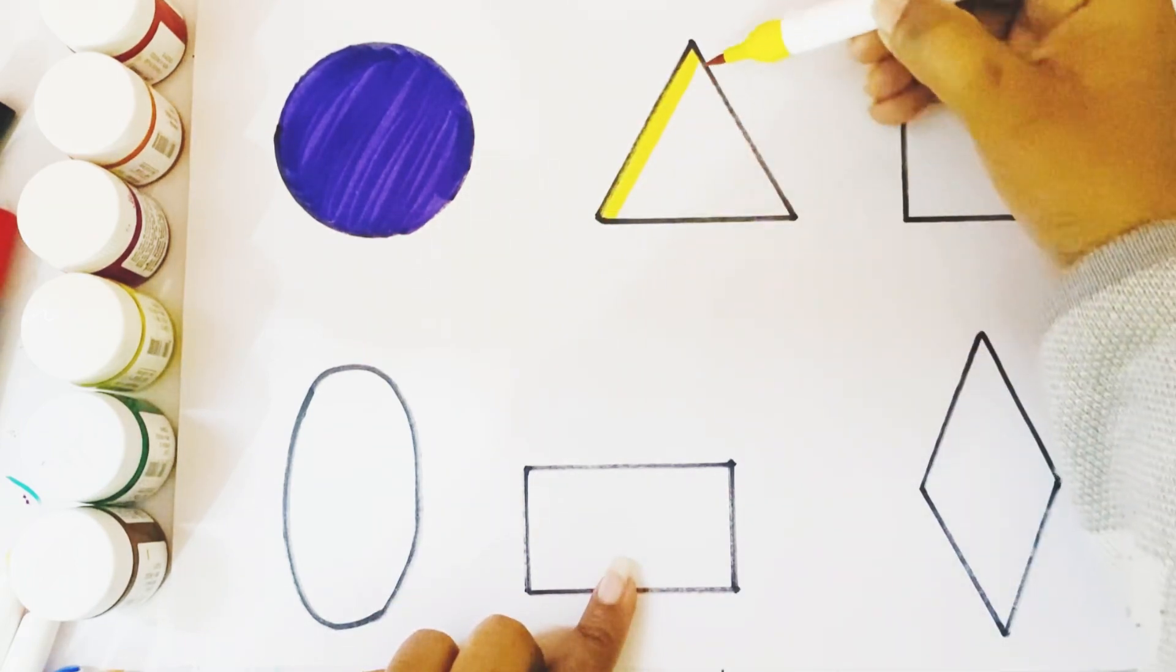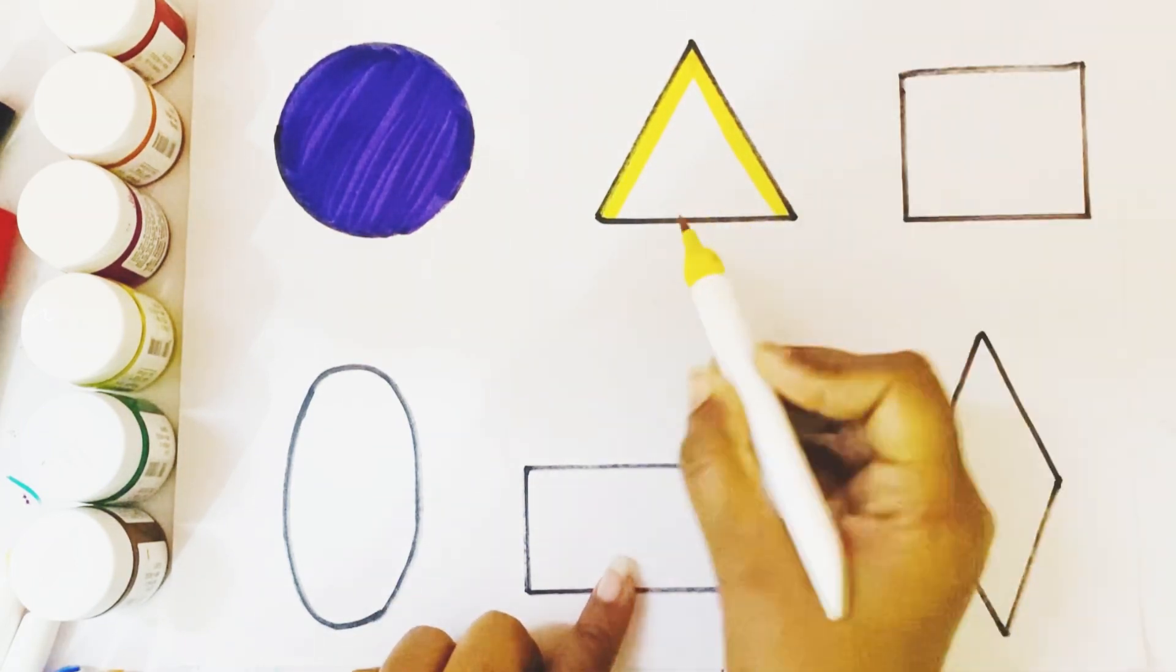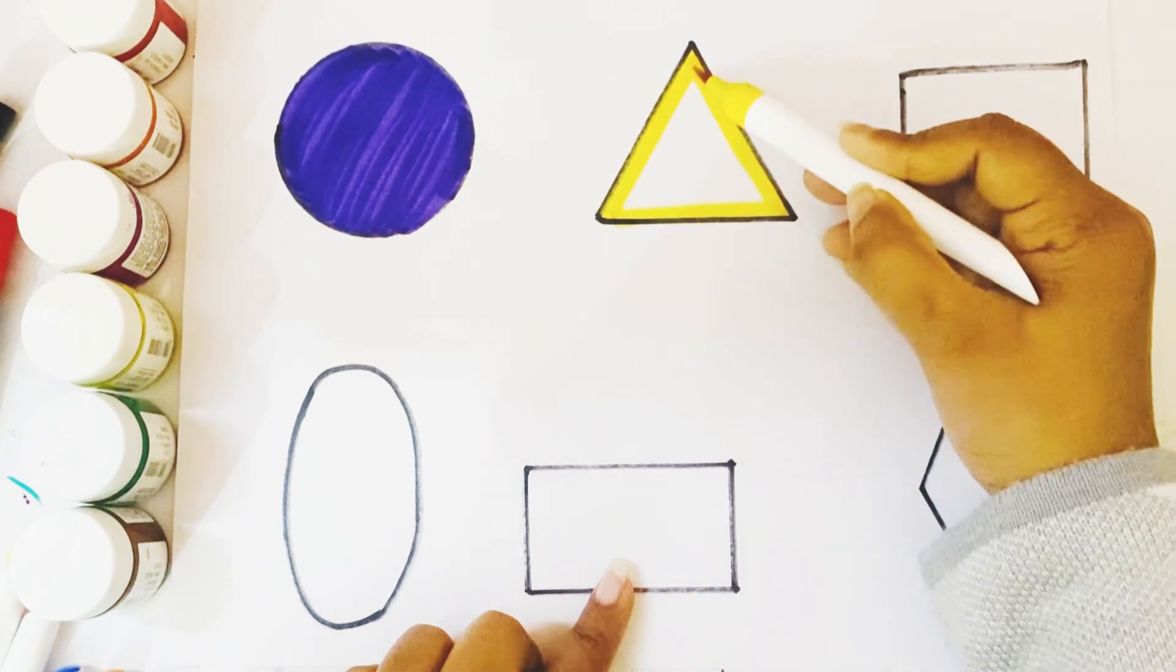Triangle shape. Yellow color. Which color kids? This is a yellow color.